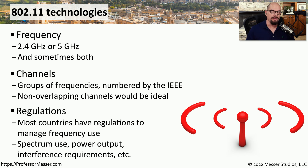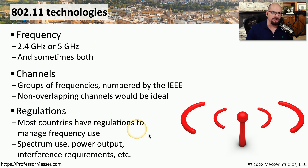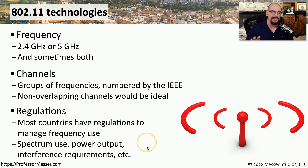Depending on where you are in the world, there's probably a governmental agency responsible for managing the wireless spectrum or the frequencies used for these 802.11 networks. These regulations often dictate exactly which frequencies should be used. They'll specify the maximum amount of power that can be used on those networks, and they'll set requirements and limits over how much interference can be caused by these 802.11 networks.